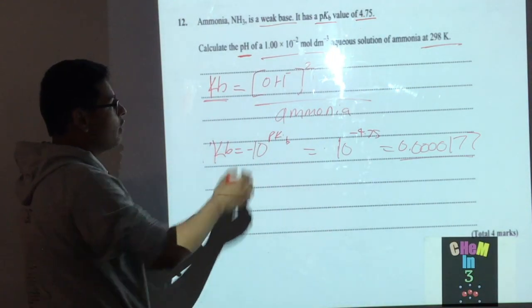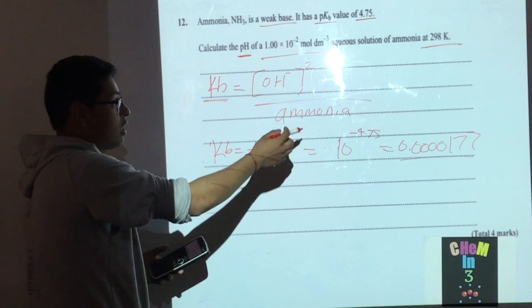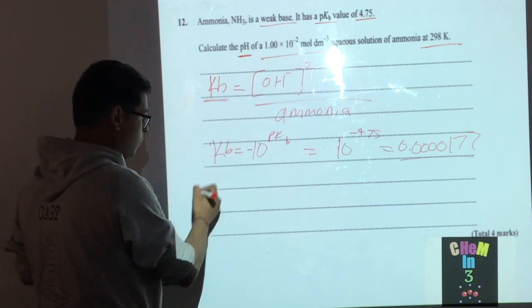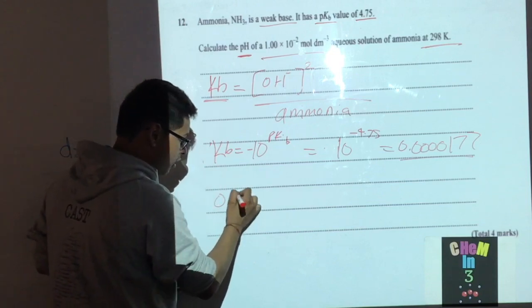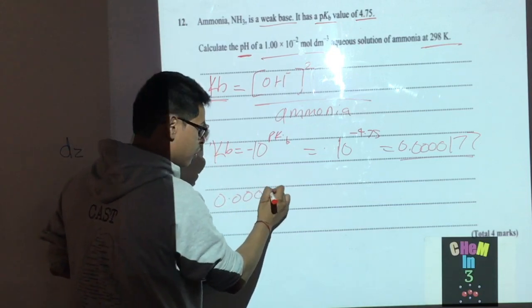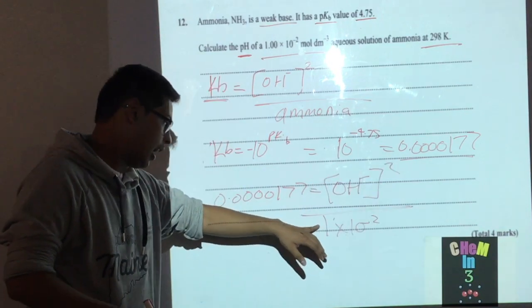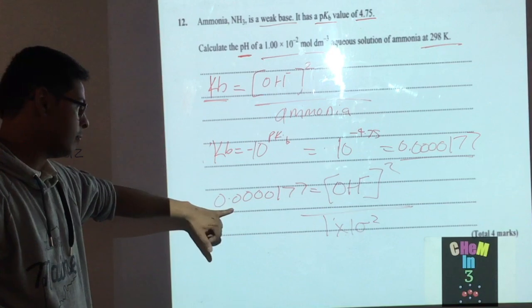Now we already know what the ammonia's concentration is for this reaction. Plugging all these values in, we get an equation of 0.0000177 equals [OH⁻]² divided by the ammonia concentration. Next, we multiply the ammonia's concentration with the KB value.